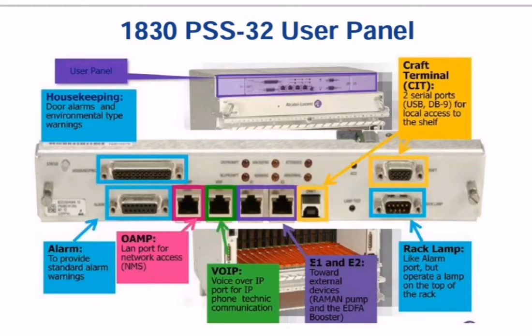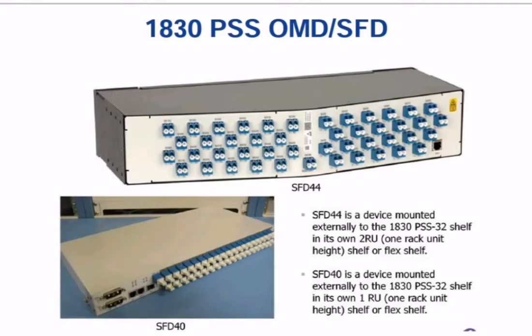The next one is for VoIP services — if any customer wants voice over IP telephonic communication, we assign this port to that customer. The next one is used for a ramp lamp, which is an alarm port but it operates a lamp on the top of the rack. The next ones are two serial ports: USB and DB9, which are used for the shelf.